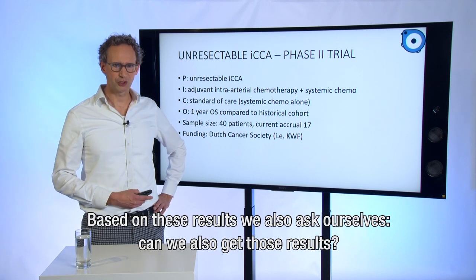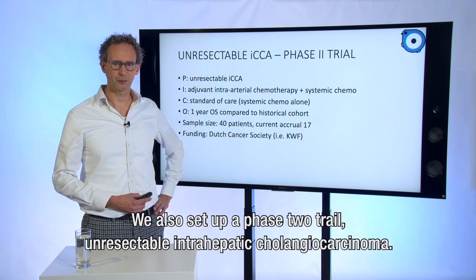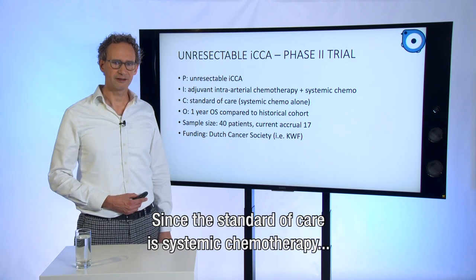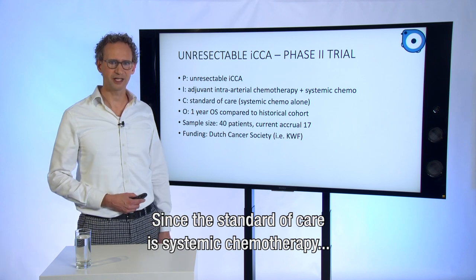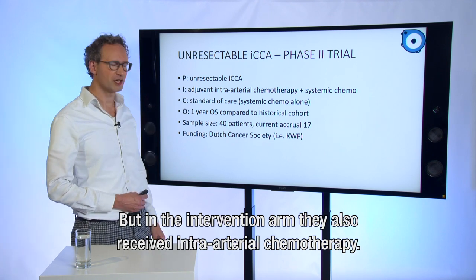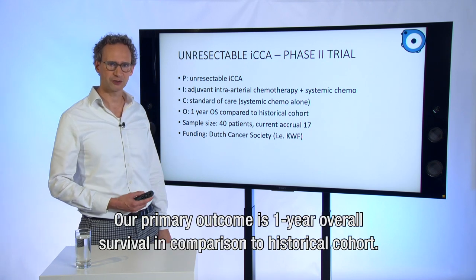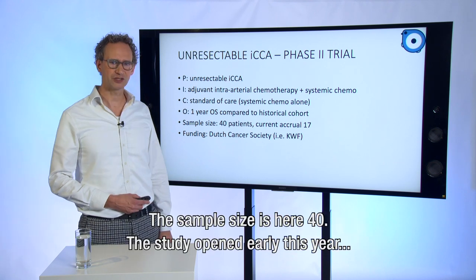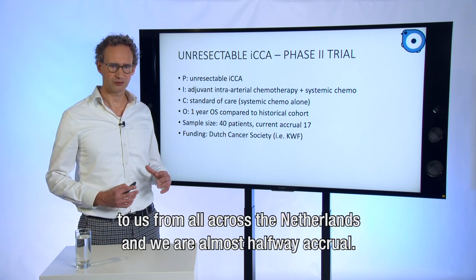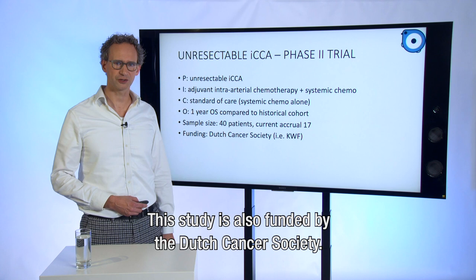Based on these results we asked ourselves whether we could also get those results, so we set up a phase two trial for unresectable intrahepatic cholangiocarcinoma. Since the standard of care is systemic chemotherapy, in both arms patients receive systemic chemotherapy, but in the intervention arm they also receive intra-arterial chemotherapy. Our primary outcome is one-year overall survival in comparison with a historical cohort. The sample size is 40. The study opened early this year and we get almost all patients referred to us from all across the Netherlands — we're almost halfway to accrual. This study is also funded by the Dutch Cancer Society.